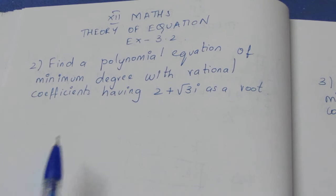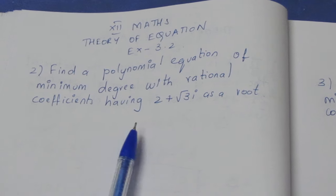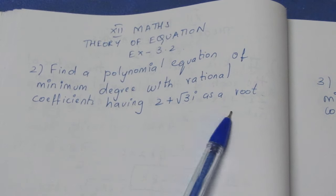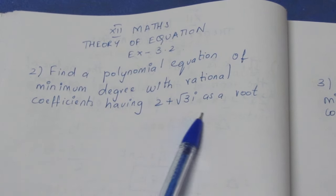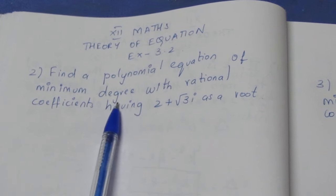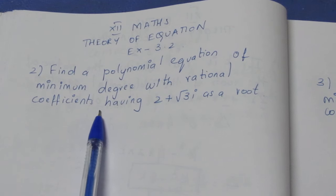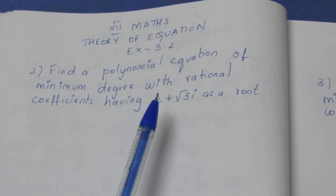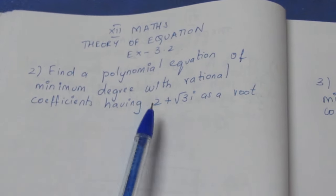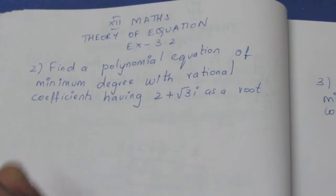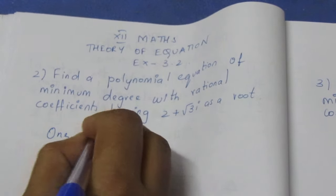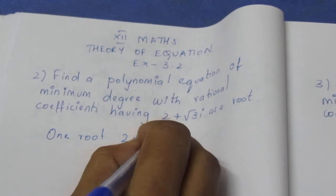a polynomial equation of minimum degree with rational coefficients having 2 plus root 3i as a root. So one root is 2 plus root 3i. We can use a quadratic or cubic equation. One root is 2 plus root 3i.